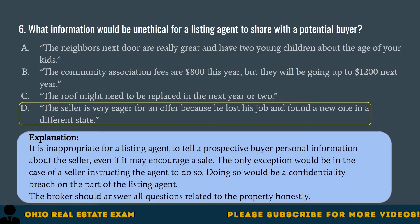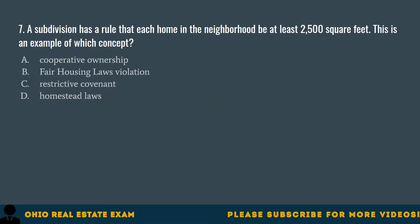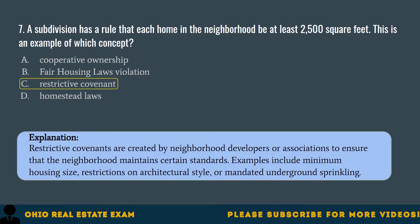Question 7. A subdivision has a rule that each home in the neighborhood be at least 2,500 square feet. This is an example of which concept? A. Cooperative ownership. B. Fair housing laws violation. C. Restrictive covenant. D. Homestead laws. The correct answer is C. Restrictive covenant. Restrictive covenants are created by neighborhood developers or associations to ensure the neighborhood maintains certain standards. Examples include minimum housing size, restrictions on architectural style, or mandated underground sprinkling.